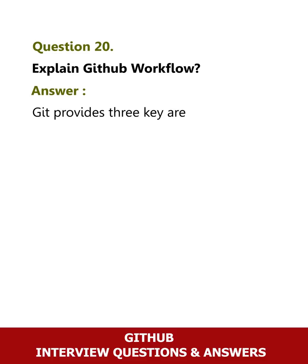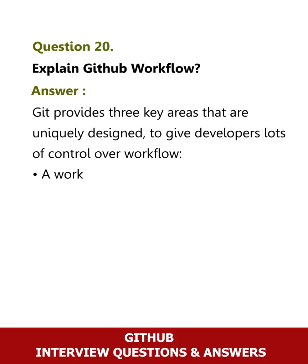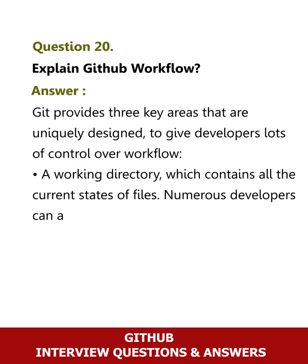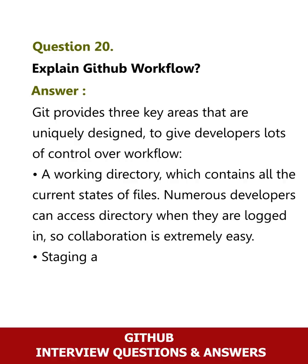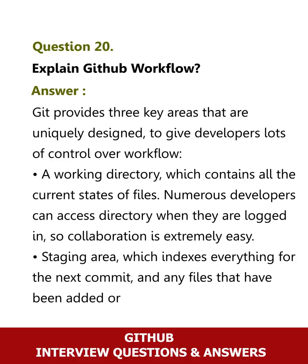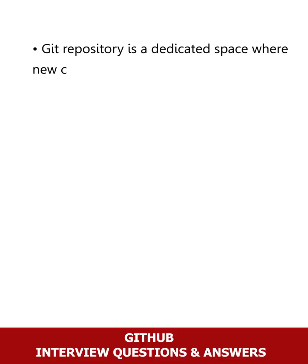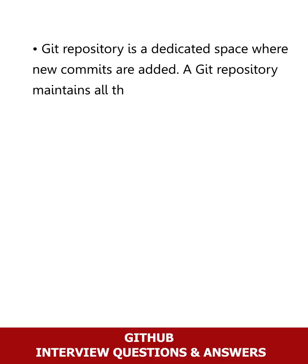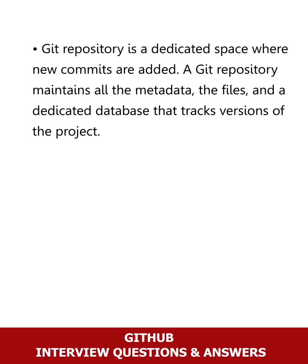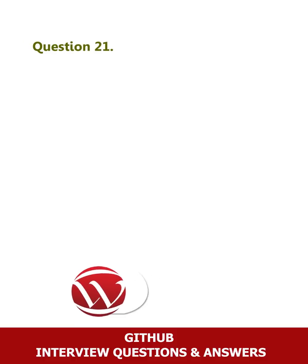Question 20: Explain the GitHub workflow. Answer: Git provides three key areas designed to give developers lots of control over workflow. First, a working directory which contains all the current states of files — numerous developers can access it when logged in, making collaboration extremely easy. Second, a staging area which indexes everything for the next commit. Third, a Git repository — a dedicated space where new commits are added and all metadata, files, and version history of the project are maintained.